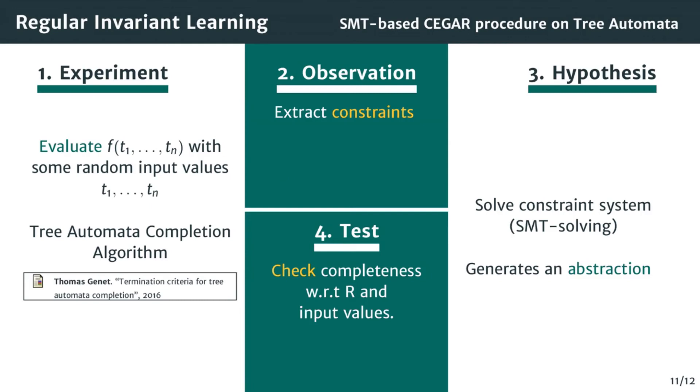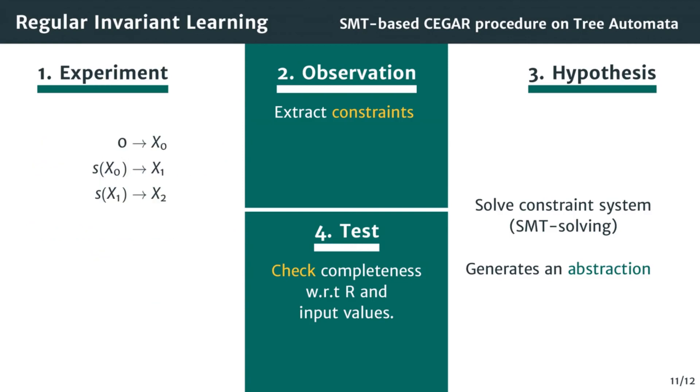To illustrate the procedure, let's take back the even function example. First, we experiment with the values 0, 1 and 2 that are recognized in this automaton by the states x0, x1, x2. Using the tree automata completion, we know that even of 0 and even of 2 rewrite to true. This is encoded by the following rules. If we only use this information, then we cannot observe the in-constraints. Every tested value so far rewrites to true. As a consequence, if everything rewrites to true, then there is no point in separating x0 from x1 from x2.